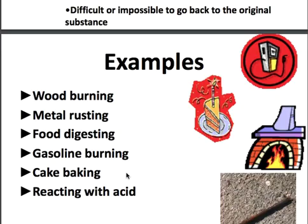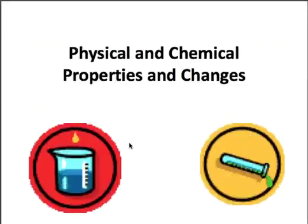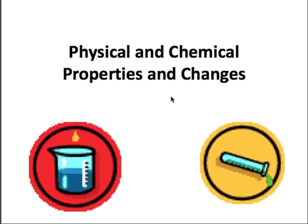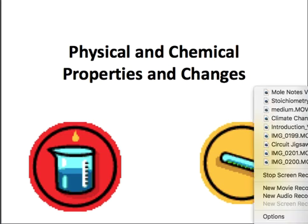So just a quick review: a physical change is when you are changing a substance but not making something new, and a chemical change occurs when you get a completely new substance at the end. I hope you enjoyed these notes and have a wonderful rest of the day!